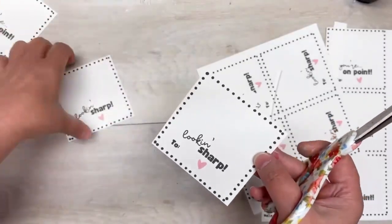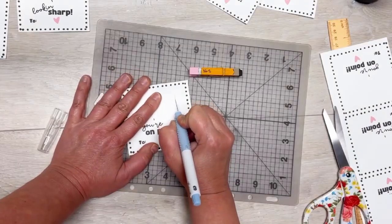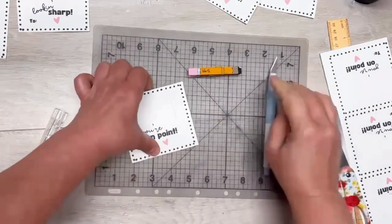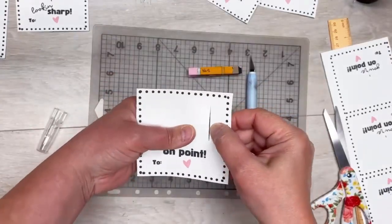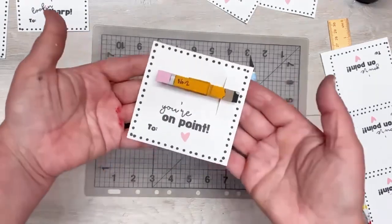I made these little cards that say looking sharp and you're right on point - come on, that's hysterical, right? Then I just put a slice on the end and I added in my little paper clip.